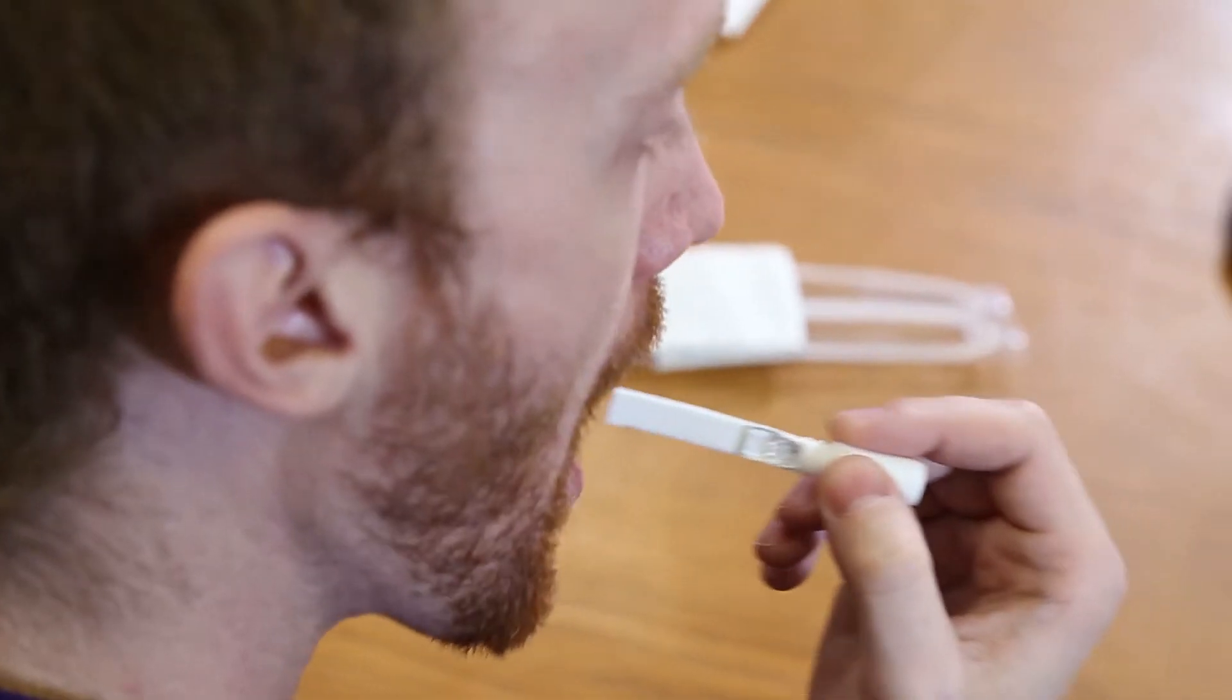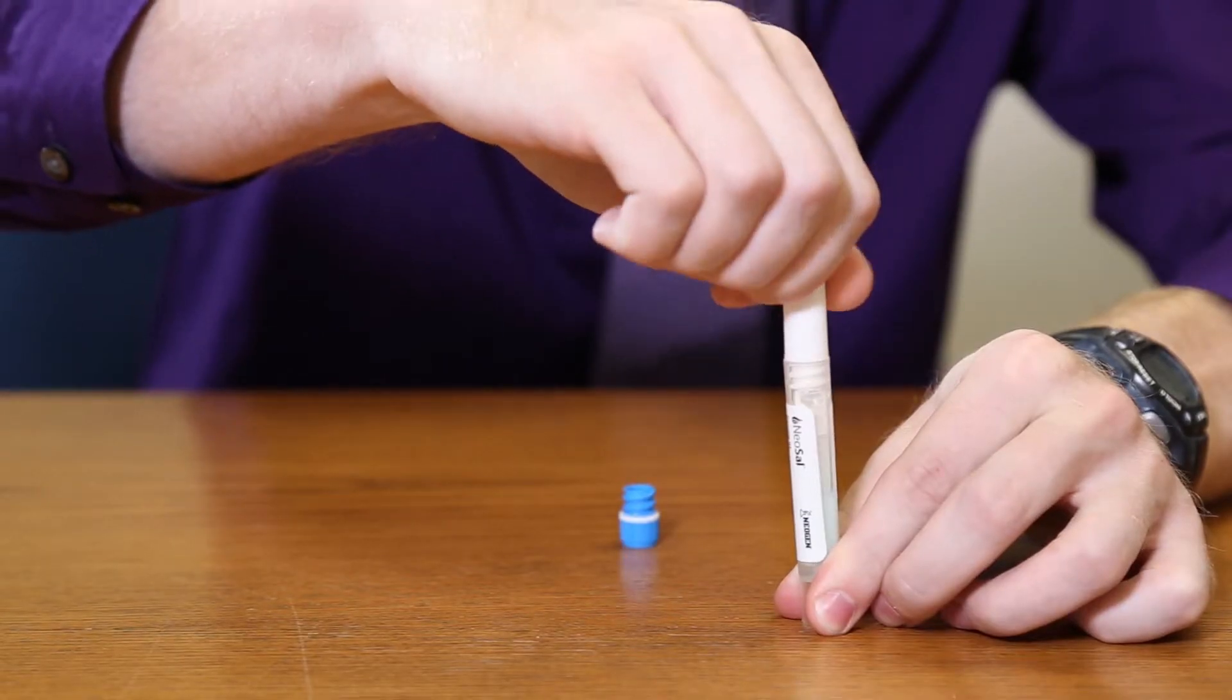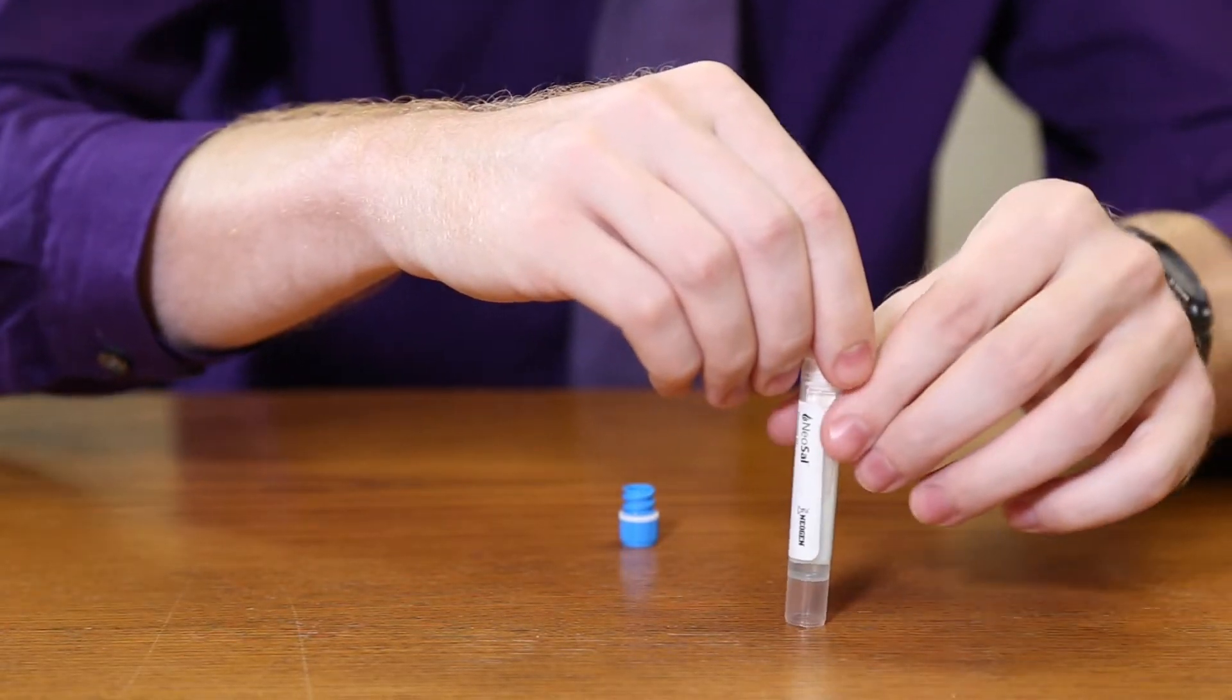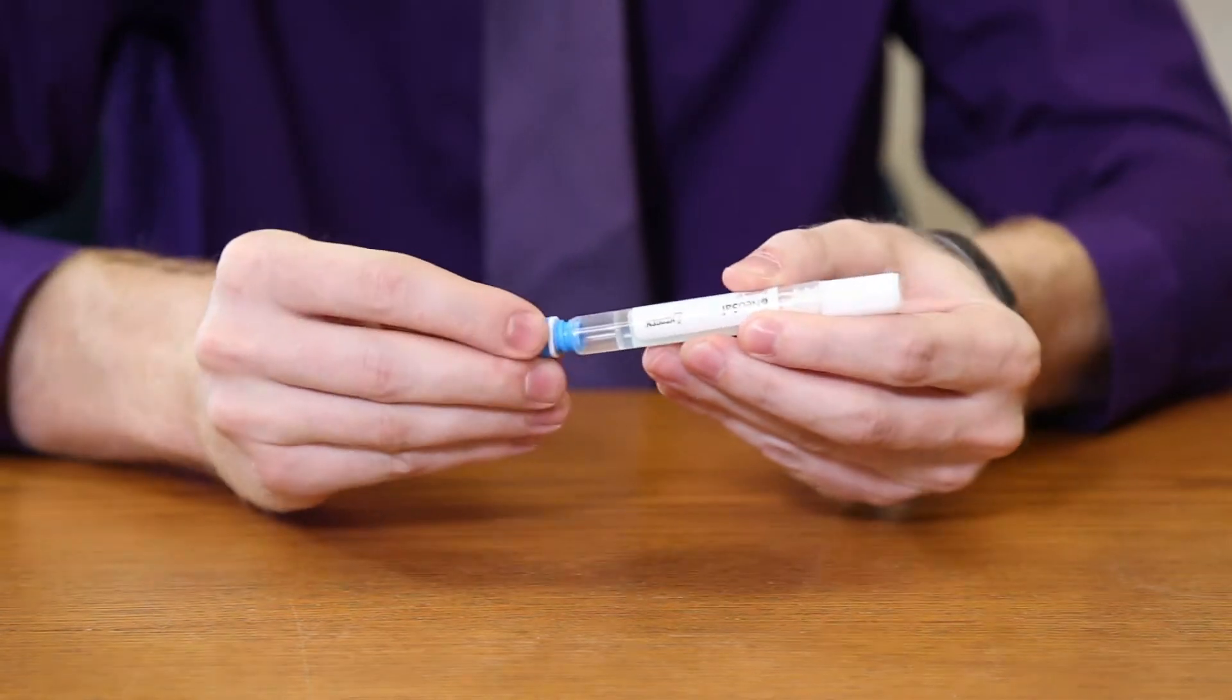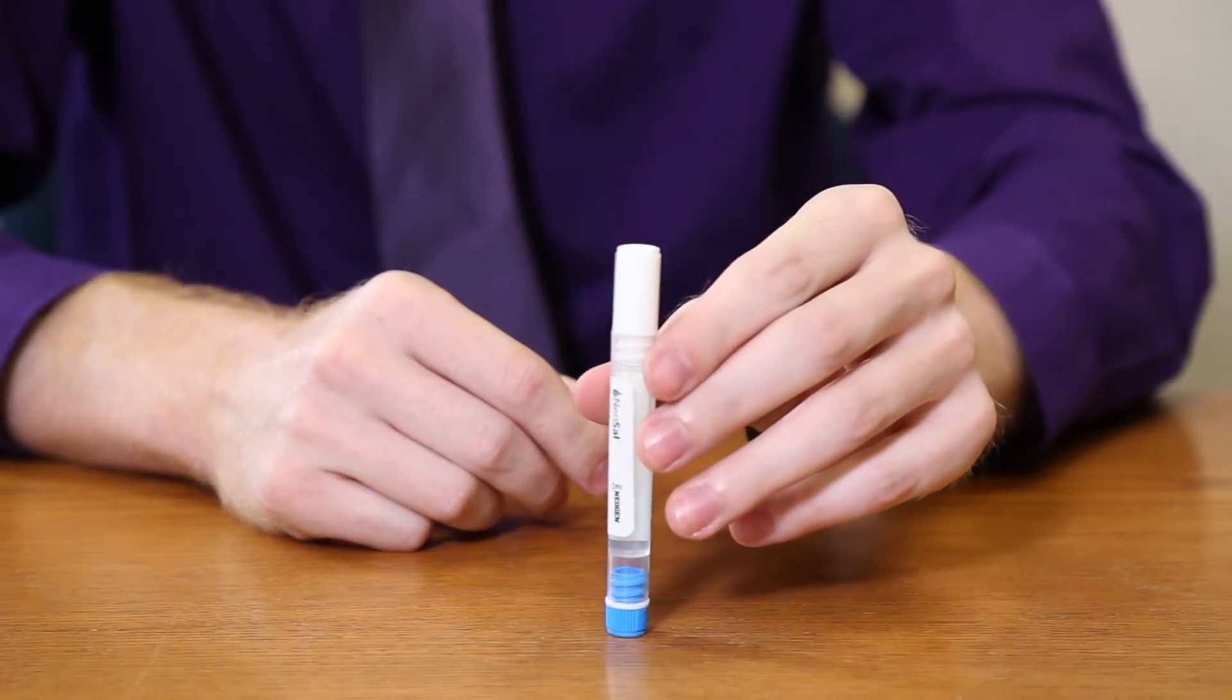The NeoSal collection pad is intended to collect oral fluid by placing the pad between the cheek and the gum. The NeoSal's unique cap-style handle allows the saturated collection pad to be easily inserted into the buffer tube following collection, preventing the need to separate the collection pad from the handle.